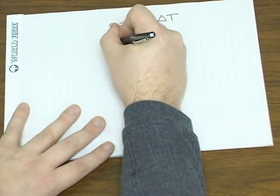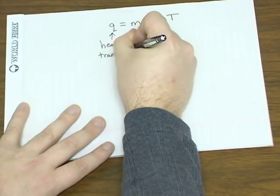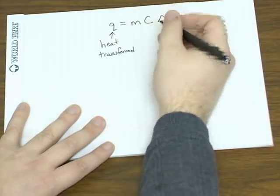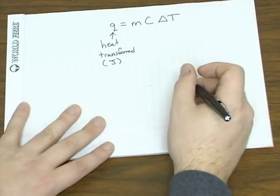Where Q is the heat transferred between the system and the surroundings, and it's in units of joules.